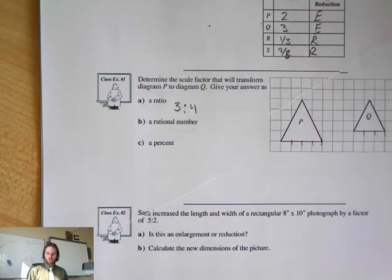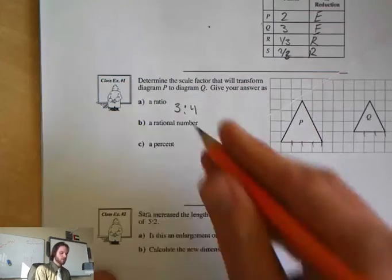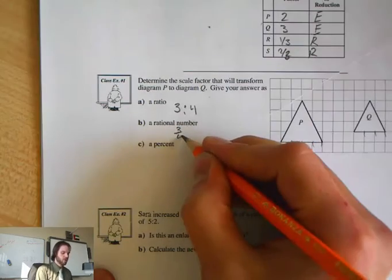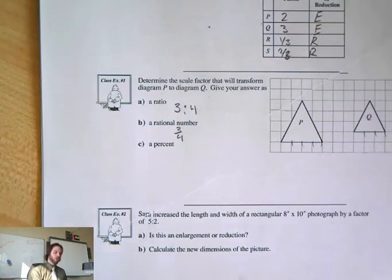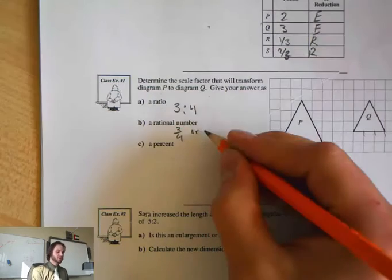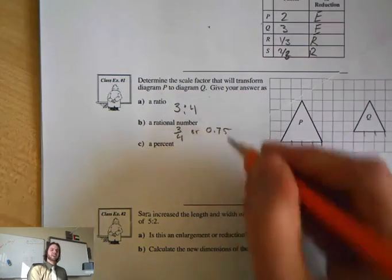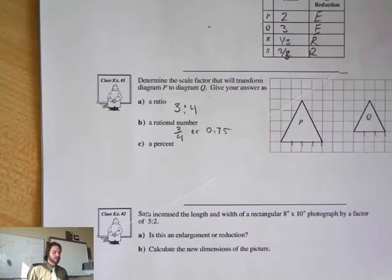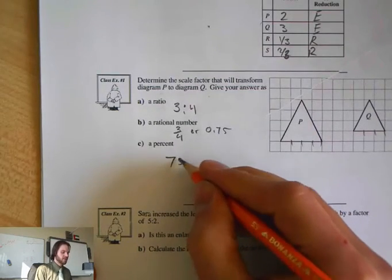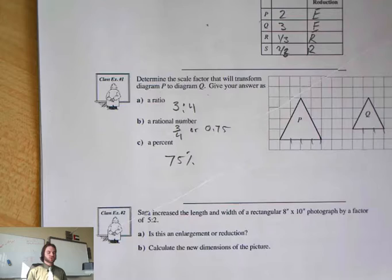Now it says what is the rational number? Well, that's 3 over 4. That's my scale factor. Or, if you want to be specific, you can go 0.75 and have it in decimals. Next one says as a percent, 75%. So that one there is a reduction.